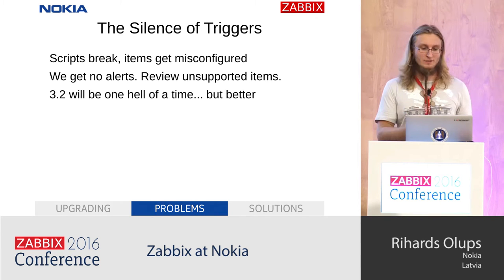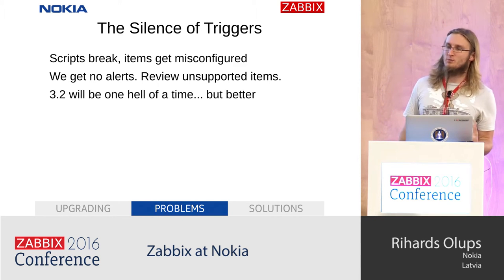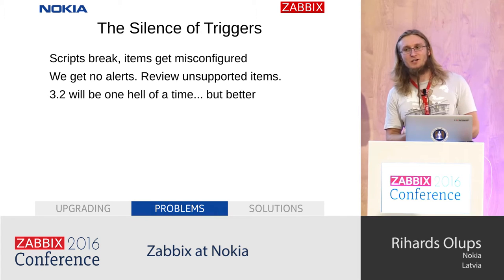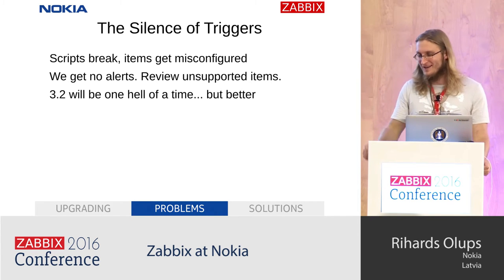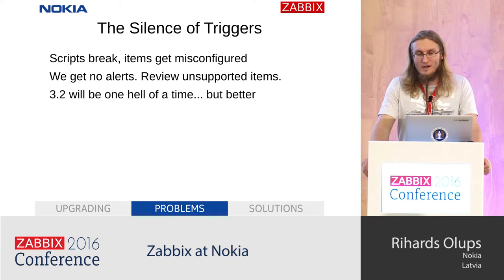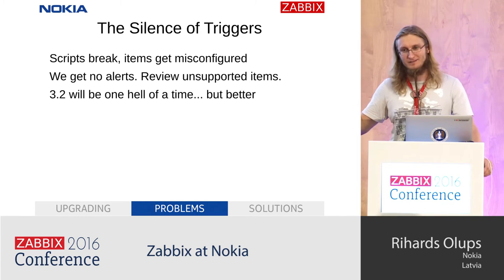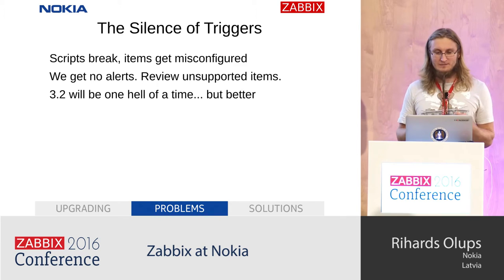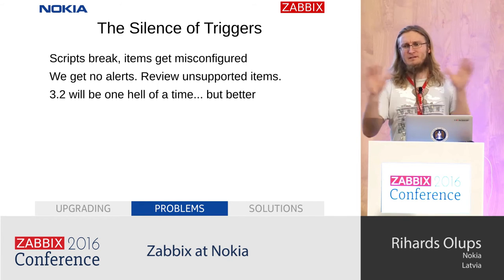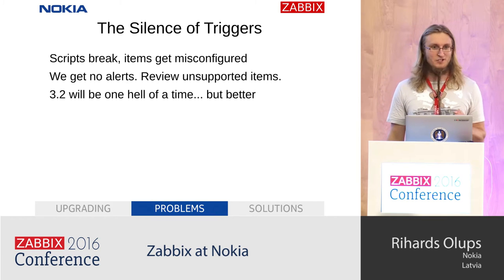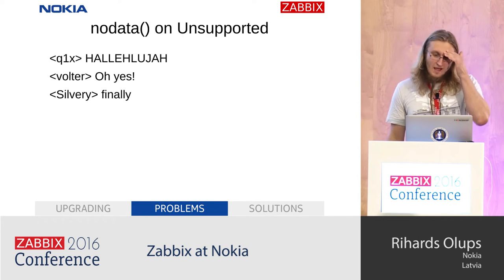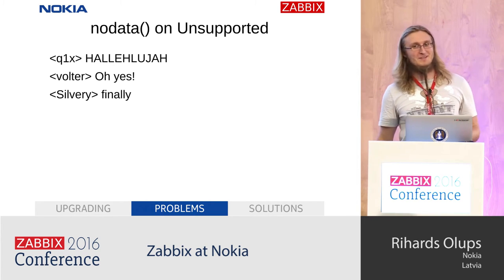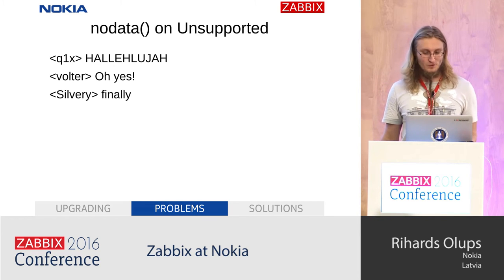Scripts tend to break for various reasons. When they break, items turn unsupported — we get no alerts. So we try to review unsupported items manually, which is a good idea in current versions of Zabbix. When 3.2 comes out — and I know some people have named this the greatest feature in Zabbix ever, though I disagree since runtime log level changing was the greatest ever, but this one is close — the no-data trigger will fire on unsupported items in 3.2. We'll probably have a hell of a time because everything will fire, but it will all be for the greater good.